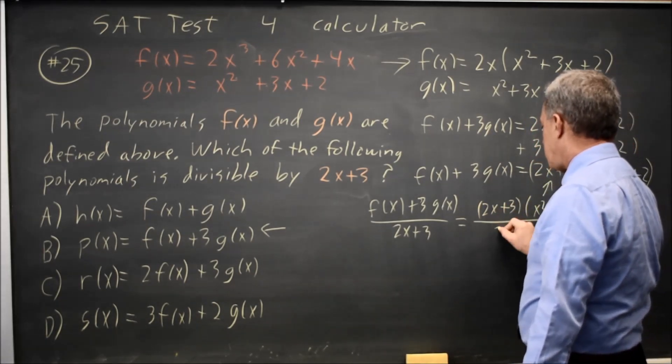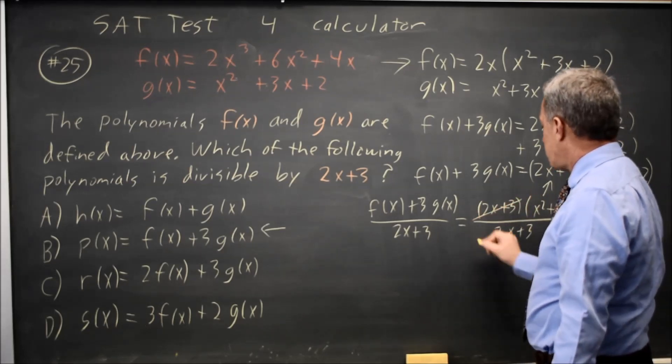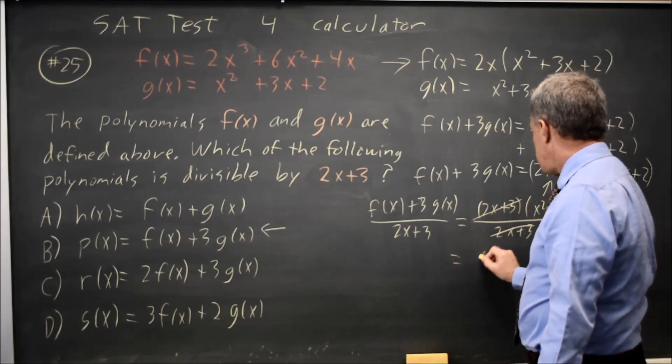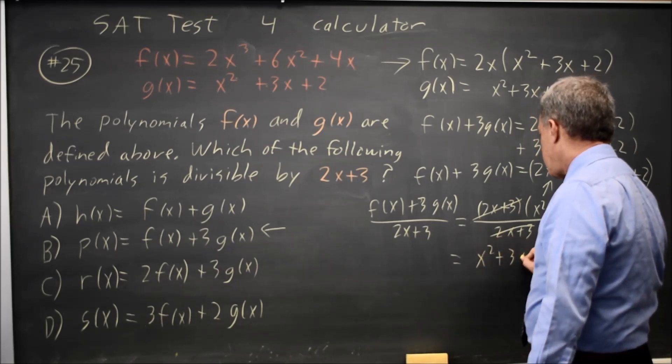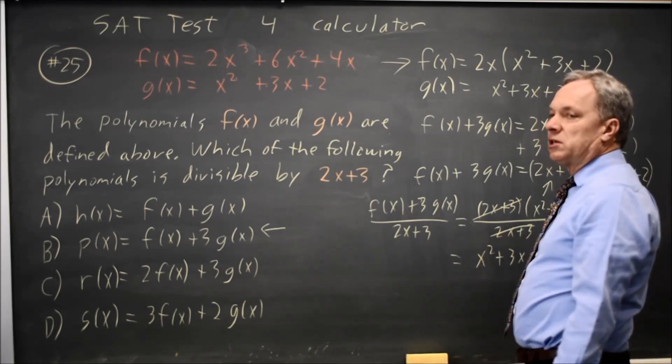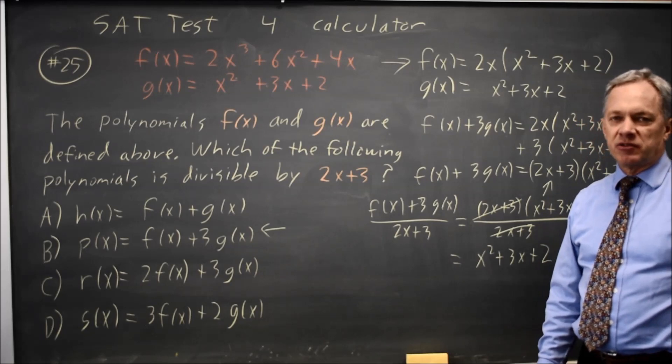Divided by 2x plus 3. 2x plus 3 over 2x plus 3 is 1, so you get x squared plus 3x plus 2. That expression did divide evenly.